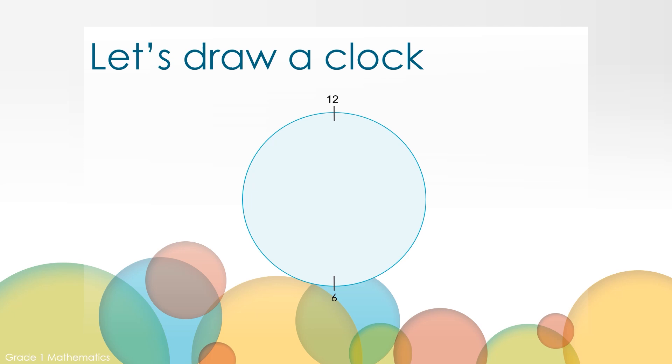The next easy part is to draw the quarter marks on the clock. One on the right side and one on the left. Do you know what numbers should go there? This is where the 3 and the 9 are on the clock. The last thing we can do is fill in the rest of the clock with the rest of the numbers.